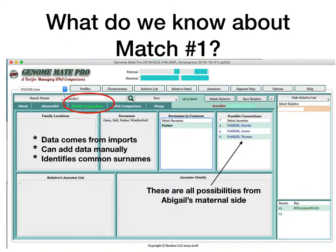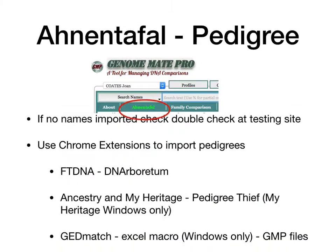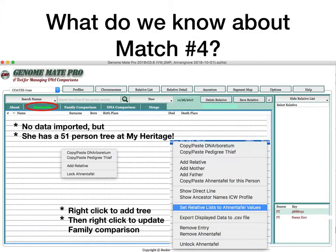Trees don't always import, but there are ways to get them using Chrome extensions. We go to the Ahnentafel Pedigree tab and use the Chrome extensions — which are all in your handouts — to get the tree information into Genomate Pro. So what do we know about Match 4? Whilst there's no data imported, she has got a 51-person tree at MyHeritage. So we right-click — there's a lot of right-clicking in Genomate Pro to give you more information. We can copy and paste her pedigree using Pedigree Thief and set the relative list to Ahnentafel values.